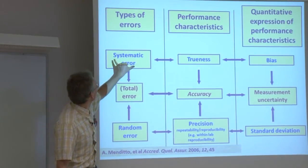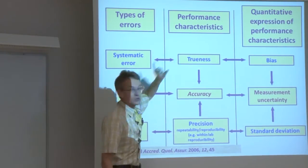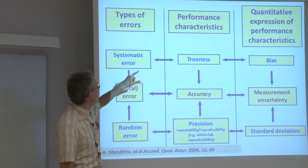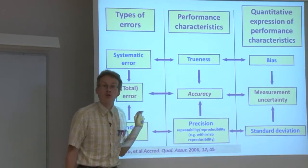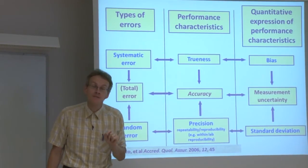So the systematic error can be estimated by trueness. So trueness is an estimate of the systematic error. For knowing trueness, we do not need to know the true value, but we need to have a reference value,